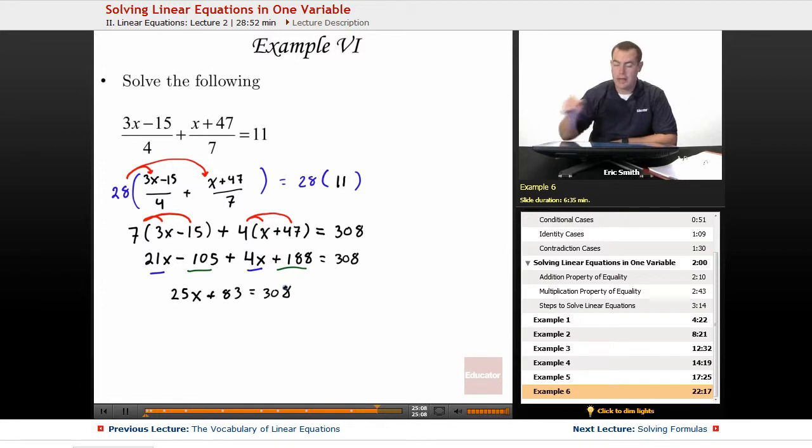Okay, looking good. Now we only have a single x to deal with, so we'll simply work on getting that isolated. We'll subtract an 83 from both sides, so that the 25x is the only thing on the left side. So 308 minus 83, this will give us 225.